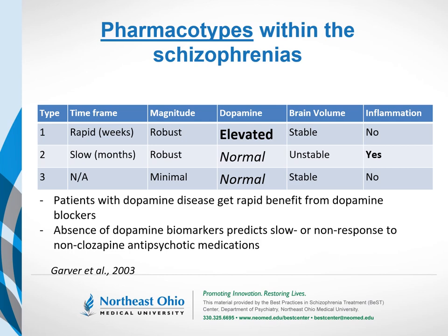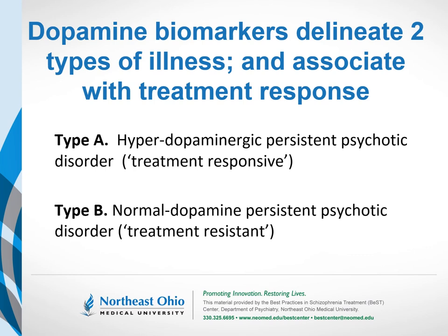A very simple yet scientifically viable classification scheme would parse the schizophrenias into Type A and Type B. Type A is more easily known as the hyper-dopaminergic type, or the high dopamine subtype of disease, whereas Type B is characterized by normal dopamine levels. The next several slides will show the biochemical data to support this division.